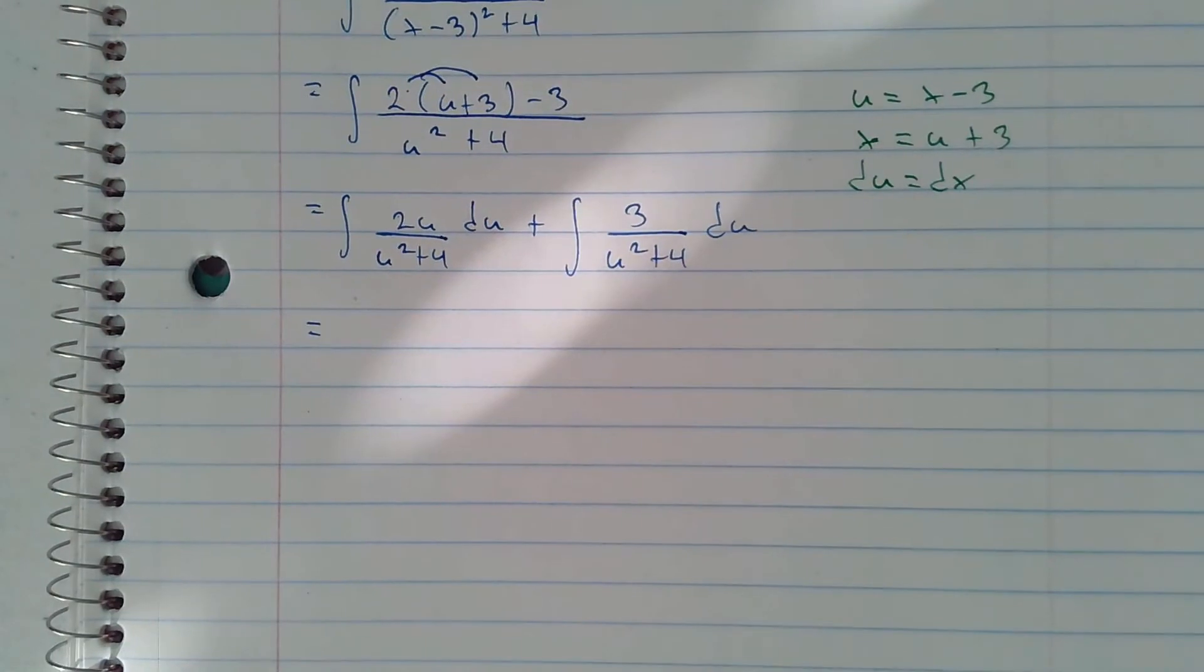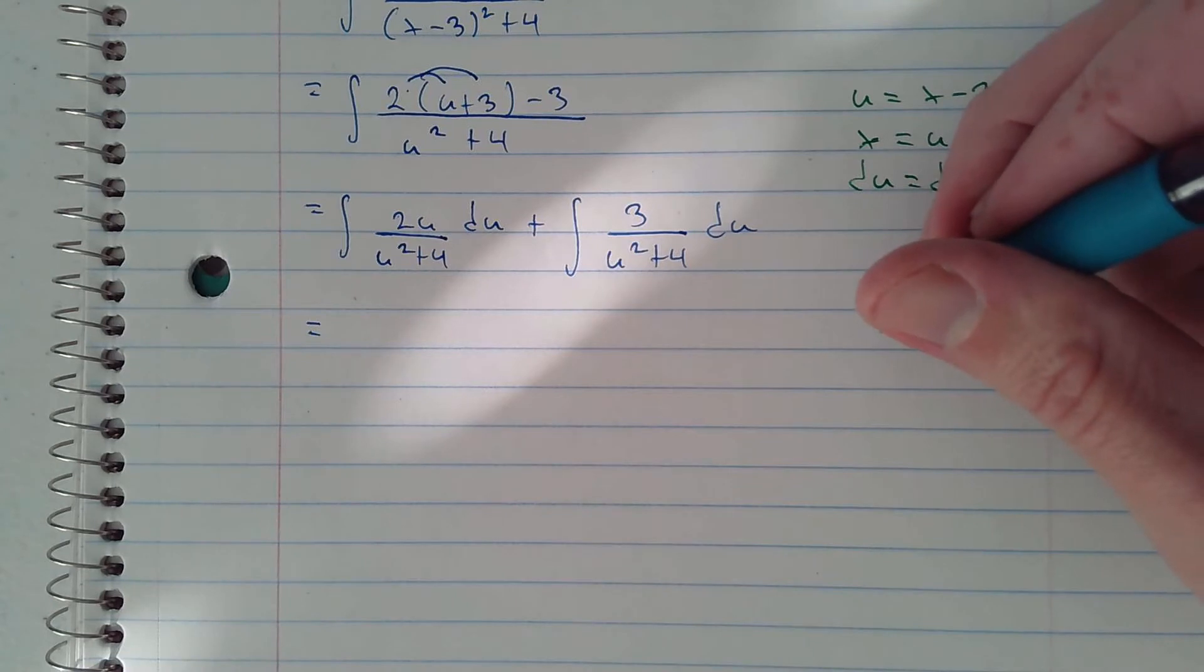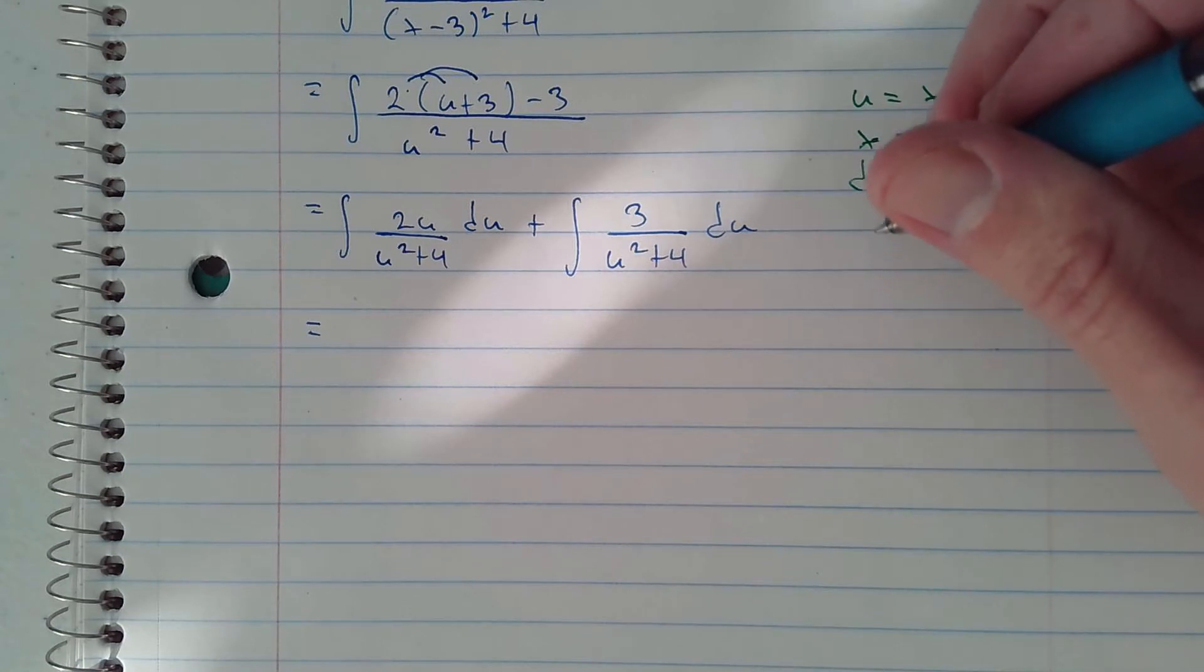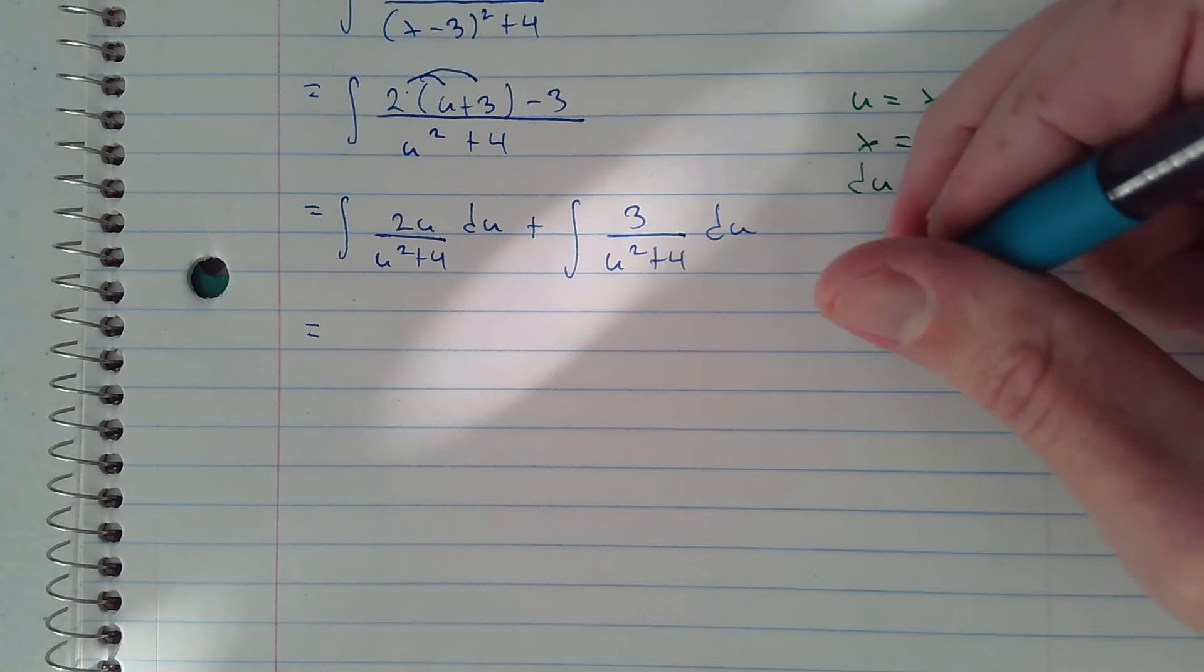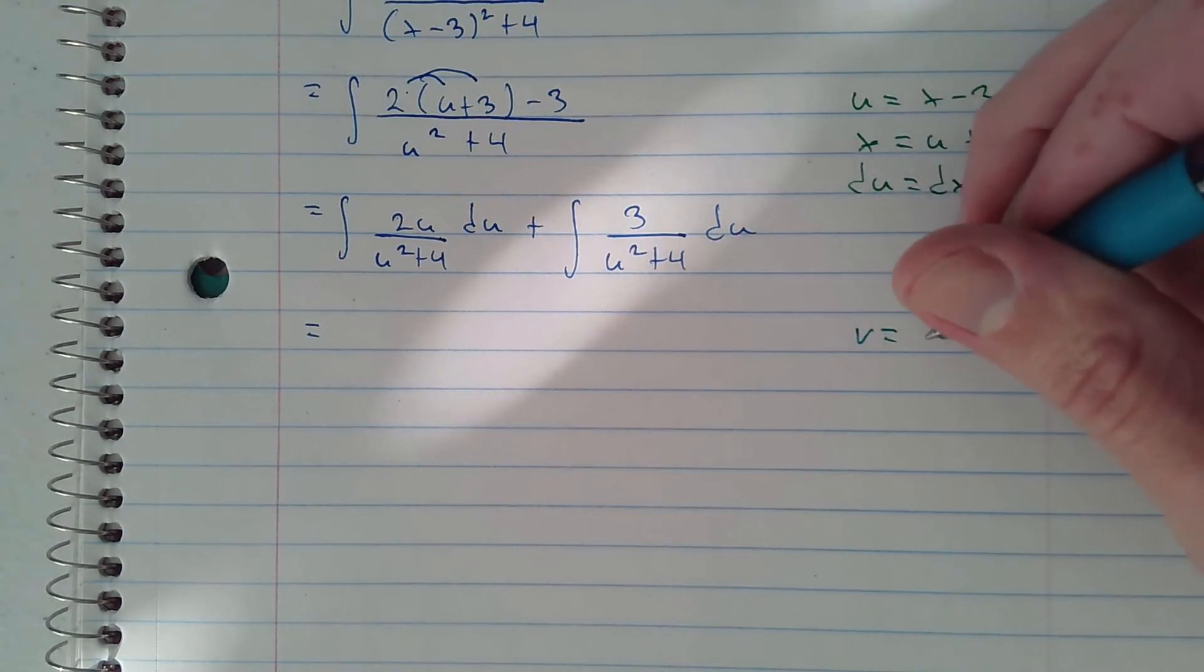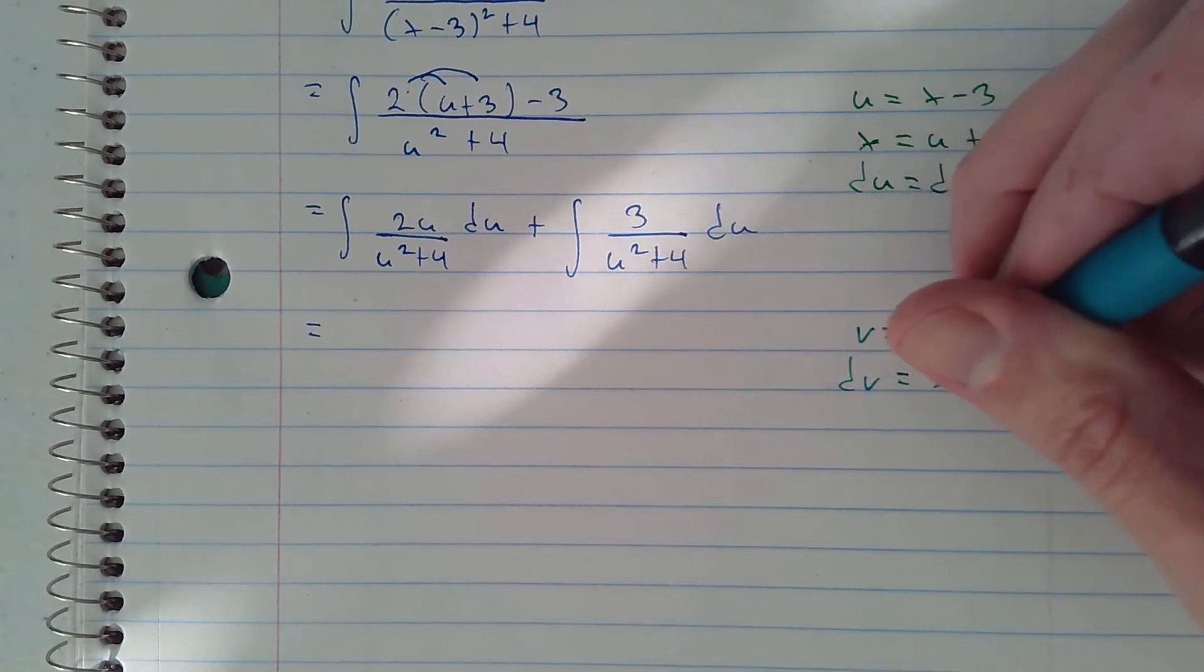Now we can use substitution again, this time with v. We're going to let v equals u squared plus 4, and then dv is 2u du.